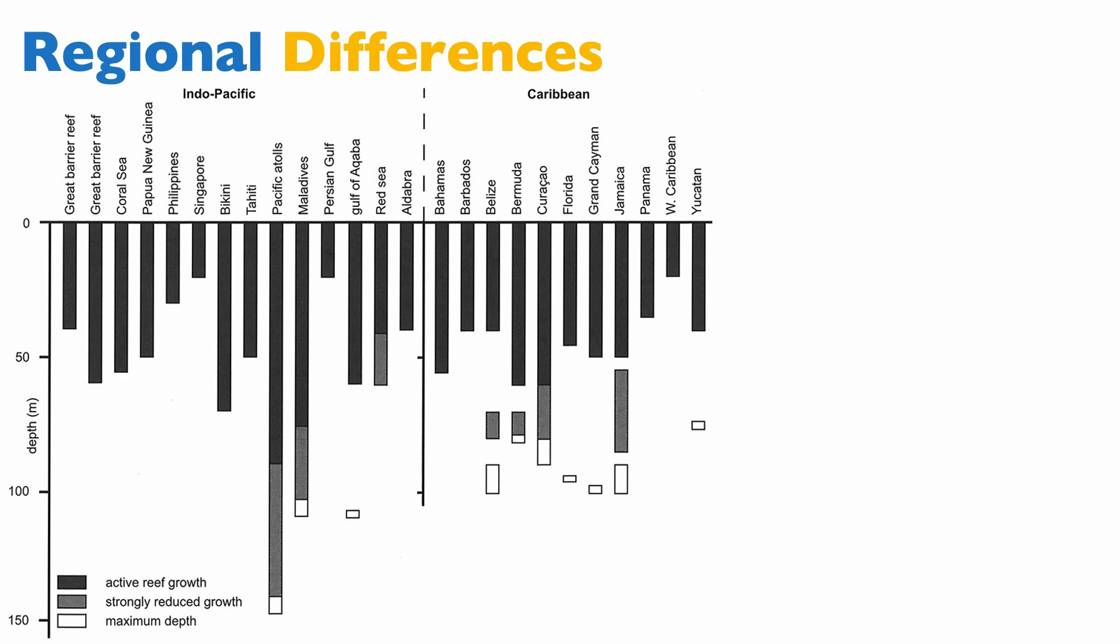So here I'm showing you multiple locations. In black, you have the area of active reef growth. In gray, areas of strongly reduced reef growth. And in white, areas of maximum depth, the last area in which the reef can grow. The vertical axis is meters below sea level, and we have different locations. And I want to focus on a few key locations that represent the end members of this spectrum. Let's look at Pacific Atoll, like the Maldives.